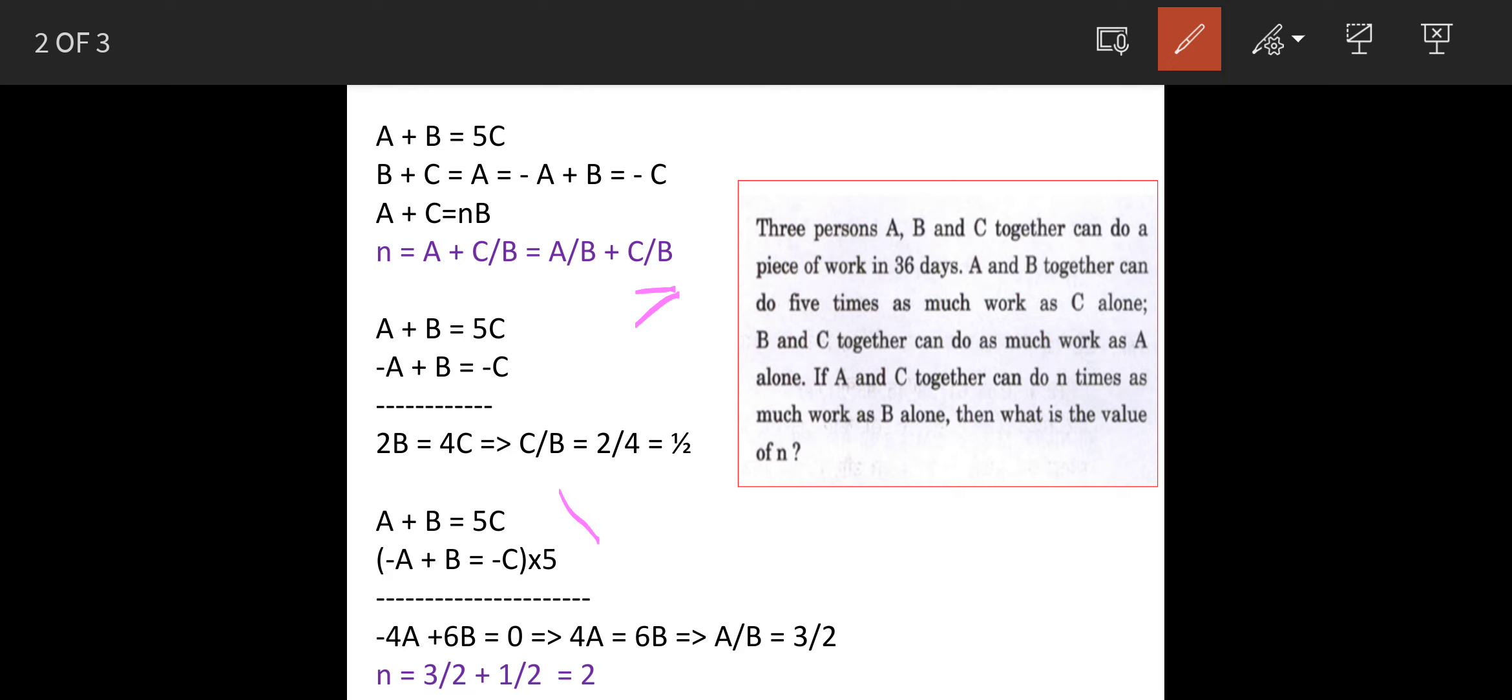We will use again the same equations A and B. So A plus B is equal to 5C and minus A plus B is equal to minus C. This time we need information in terms of A/B, so we will eliminate C. To eliminate C, we will multiply the whole equation by 5.